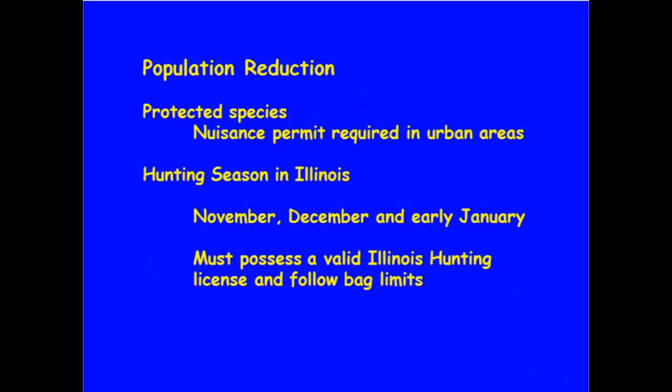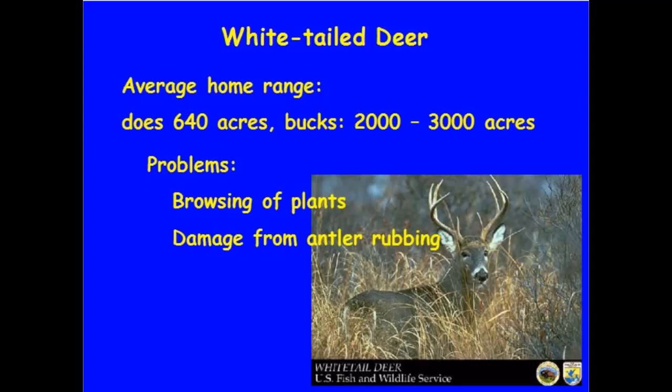In terms of rabbit population reduction as a management tool, remember they are a protected species and we have a hunting season for them. In an urban area, you can get a nuisance permit year-round. On rural areas, a wildlife biologist would probably ask if you allow hunting during November, December, and early January, and if not, he's going to encourage you to invite hunters onto your property to help reduce the population. Actually in Illinois, the eastern cottontail population is declining each year because of loss of habitat.